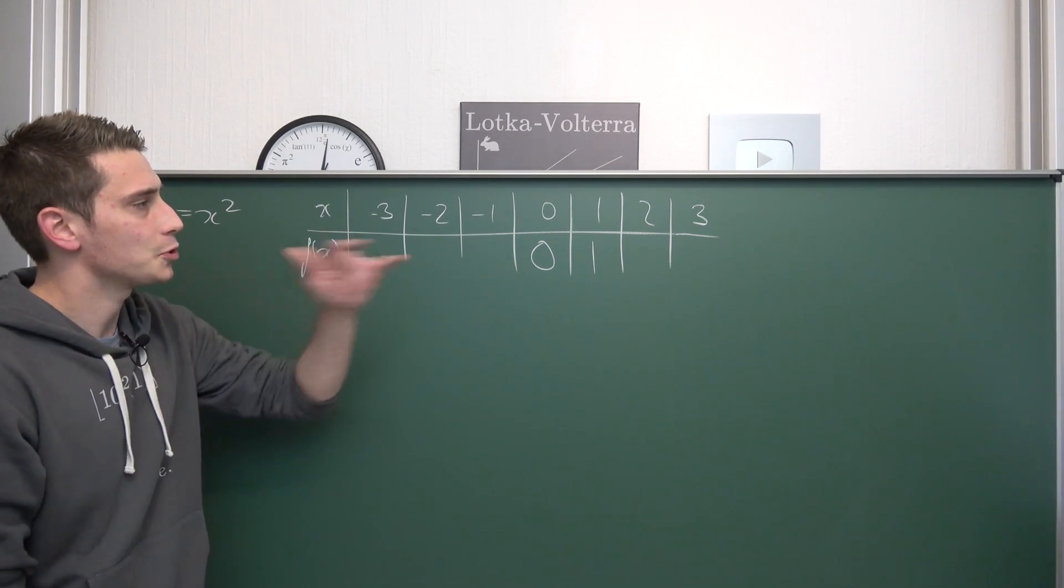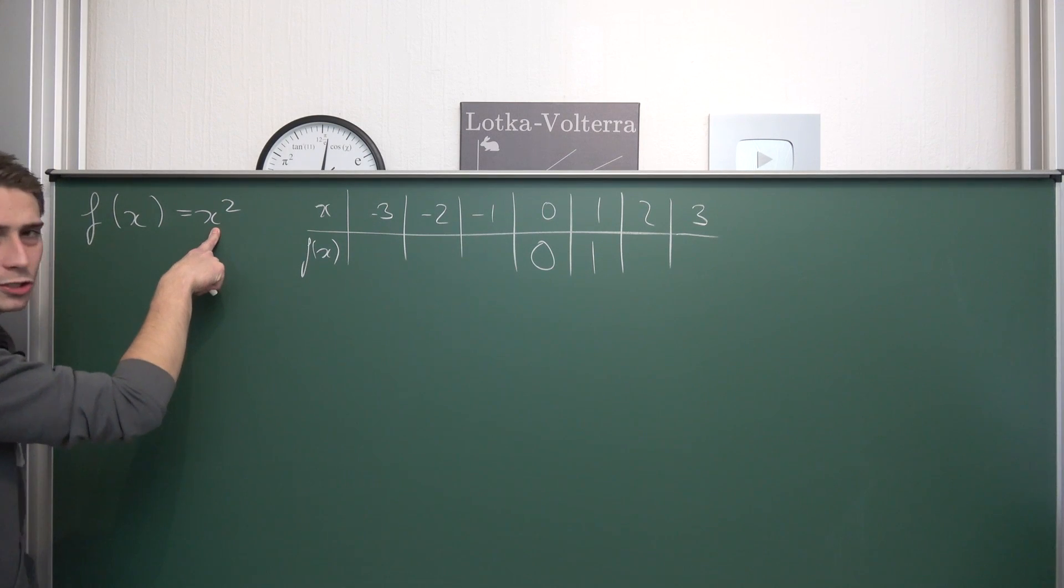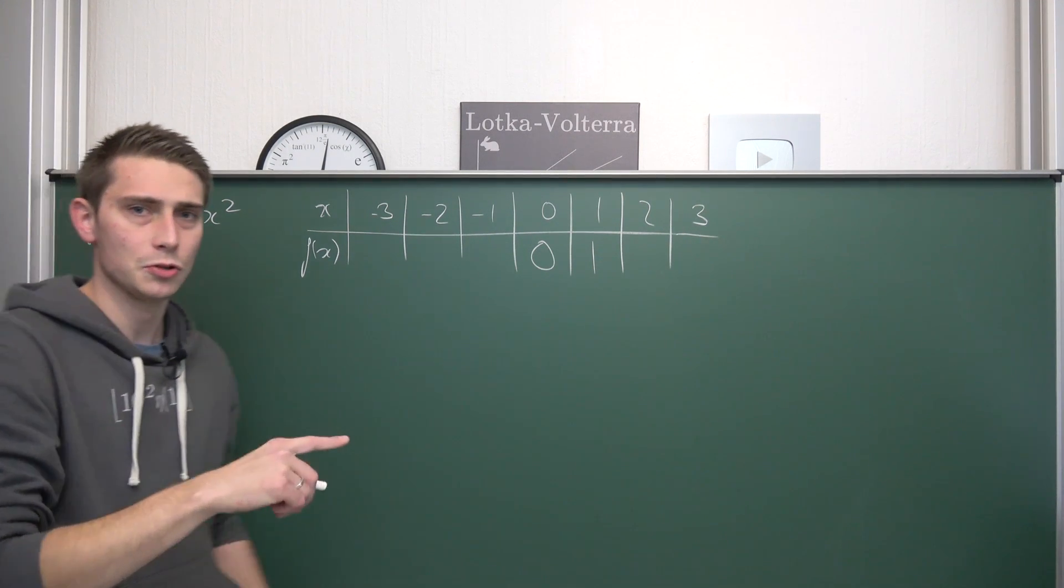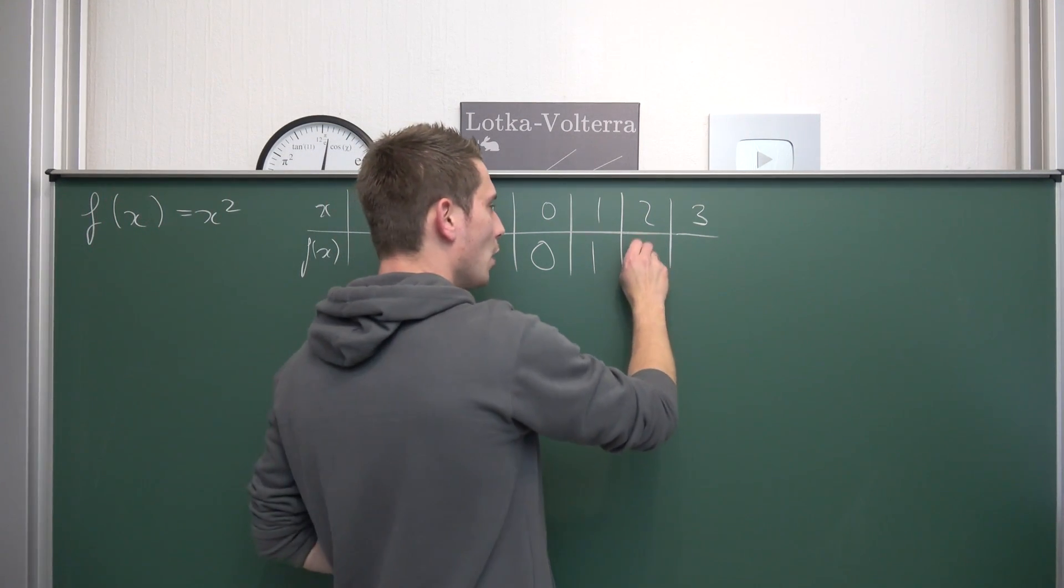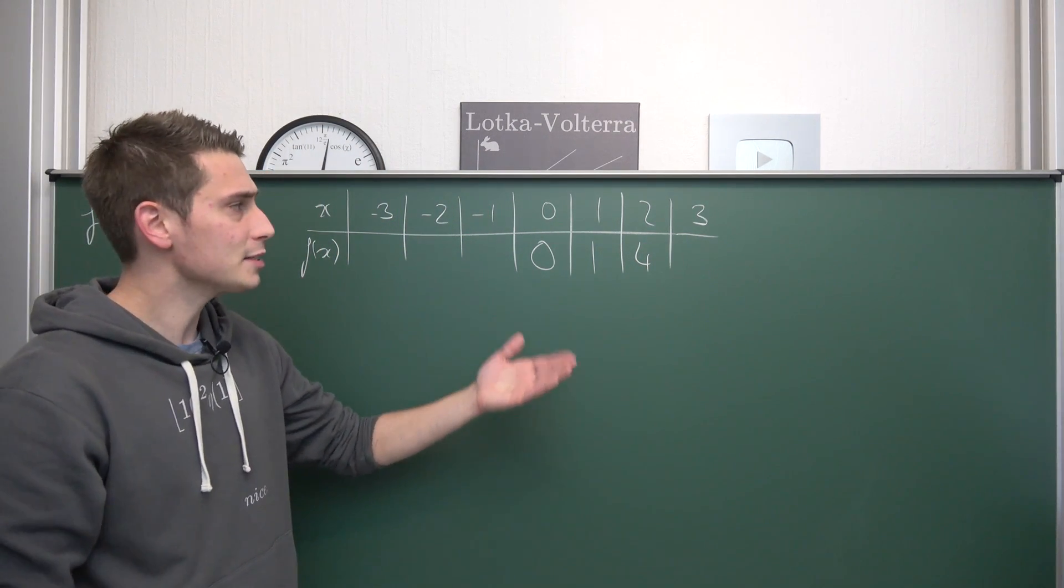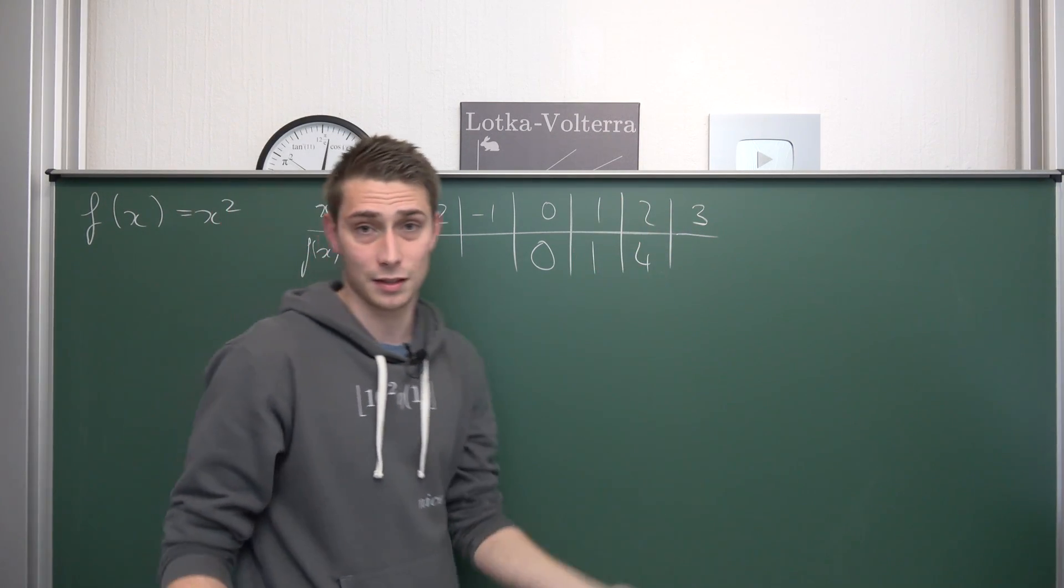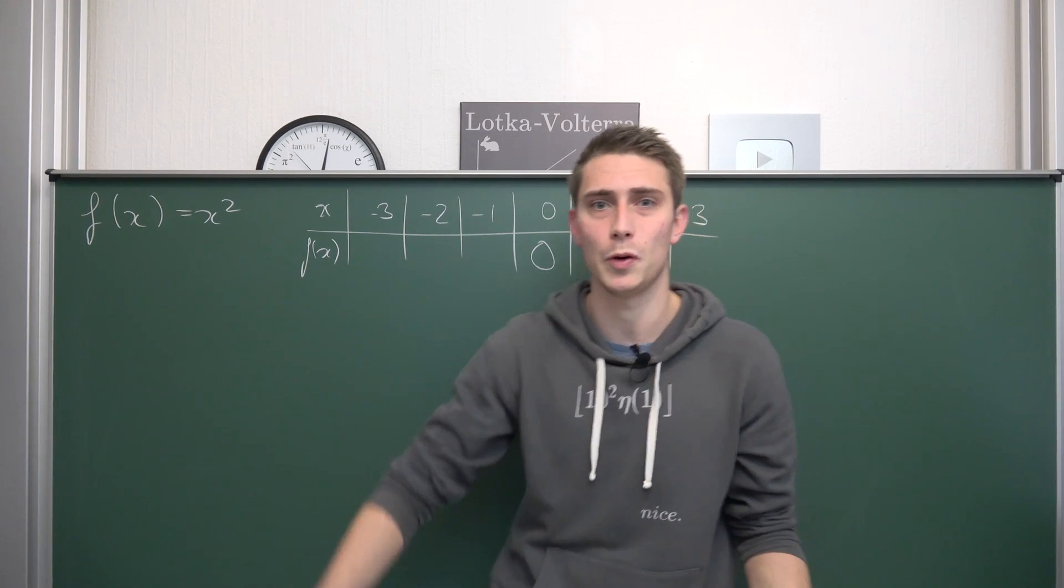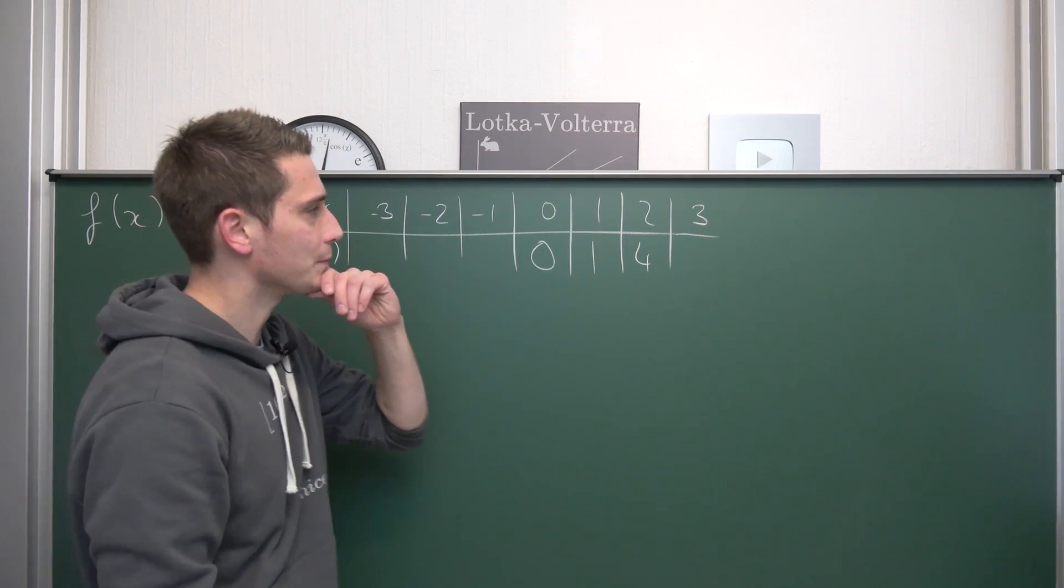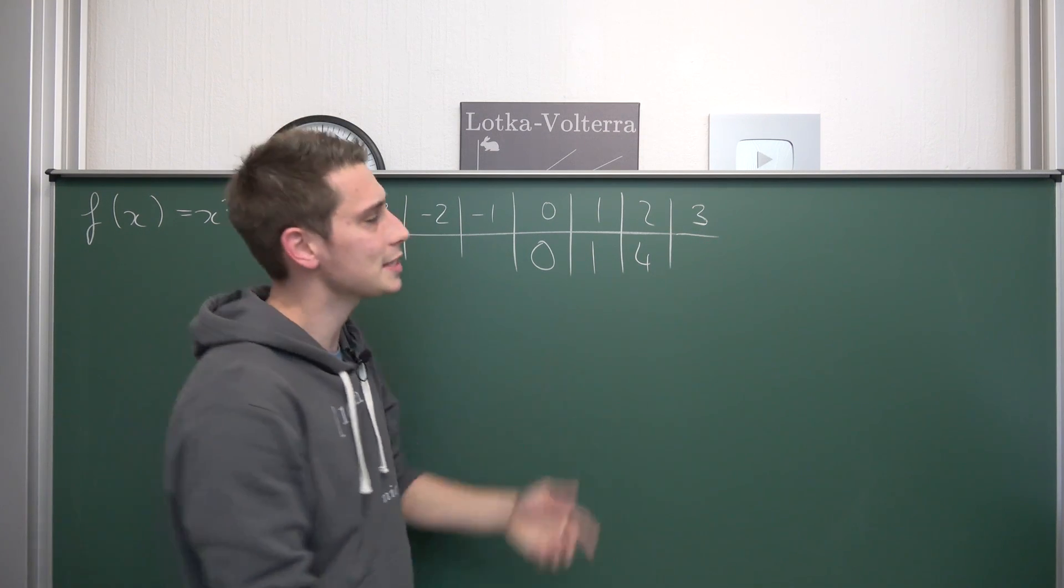Next up, two. f of two is going to give us two squared, two squared is two times two, which is four. And now, first thing, you might make a wild guess here and say, all we really did all the time was take the square of our x values, which is true by definition of this normal parabola. So, next up would probably be three squared as being the y value, which is three times three, which is nine. This is good.